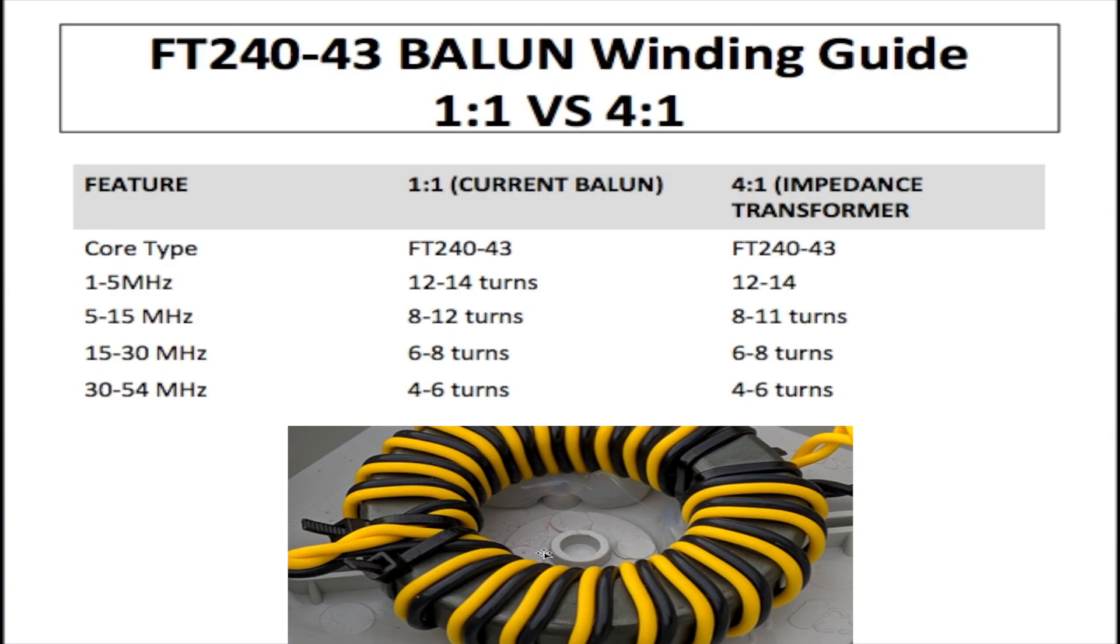1 to 5 MHz is 12 to 14 turns. 5 to 15 MHz is 8 to 12 turns. 15 to 30 MHz you have 6 to 8 turns. And 30 to 54 MHz you got 4 to 6 turns. Now if you look at this carefully you will see that the turns decrease as the frequency gets higher. So the lower the frequency the more turns you are going to have. The higher the frequency the less turns you have. And this works for both the 1:1 balun and the 4:1 balun. They both use the same toroid and they have the same turns ratio.